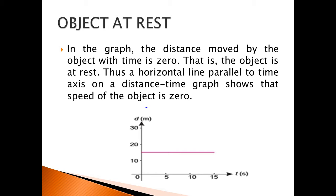When the object is at rest, the distance moved by the object with time is zero. A horizontal line parallel to the time axis on a distance-time graph shows that the speed of the object is zero. In this graph, time is taken along the x-axis and distance in meters along the y-axis, and a straight line along the x-axis shows that the object is at rest.